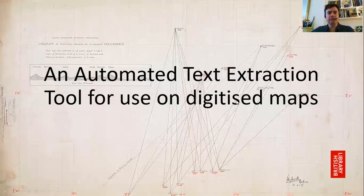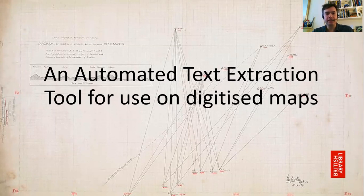My name is Nick Dykes. I'm curator of modern map collections at the British Library, and my project was to develop an automated text extraction tool for use on digitized maps.